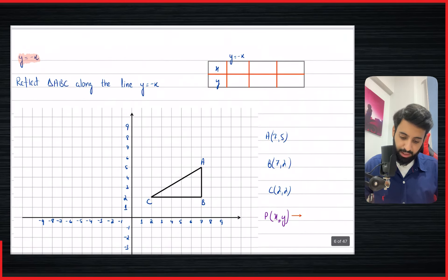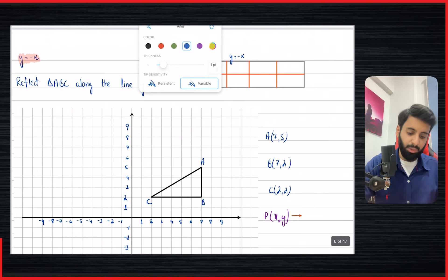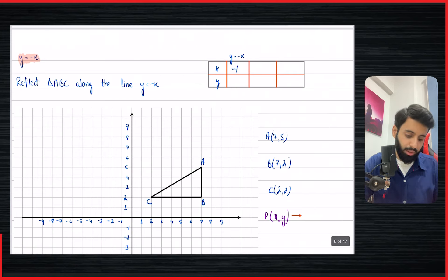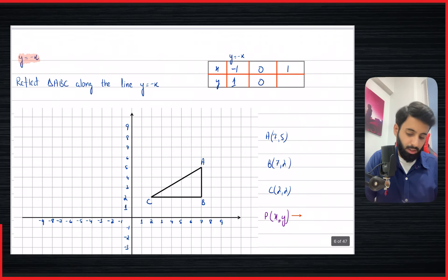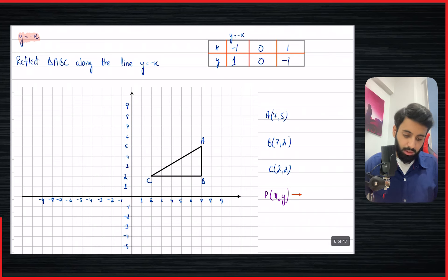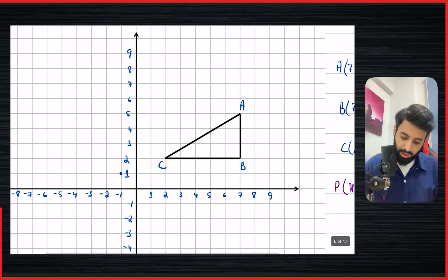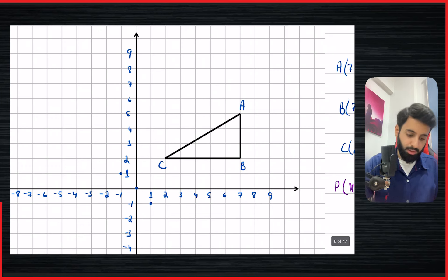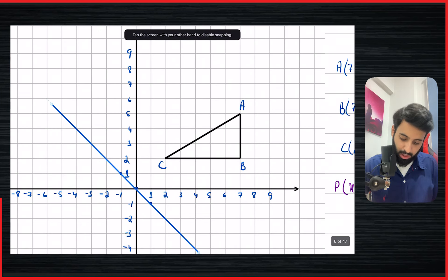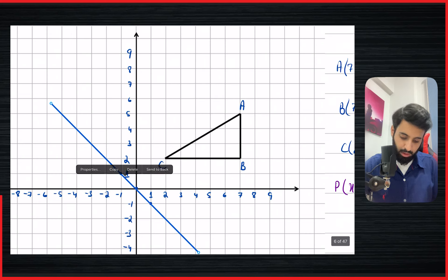The final standard case is y equals minus x. To draw this line: if x is minus one, y becomes positive one; x equals zero gives y equals zero; x equals one gives y equals minus one. Mark the points minus one comma one, zero comma zero, and one comma minus one, then extend the line through all three points.